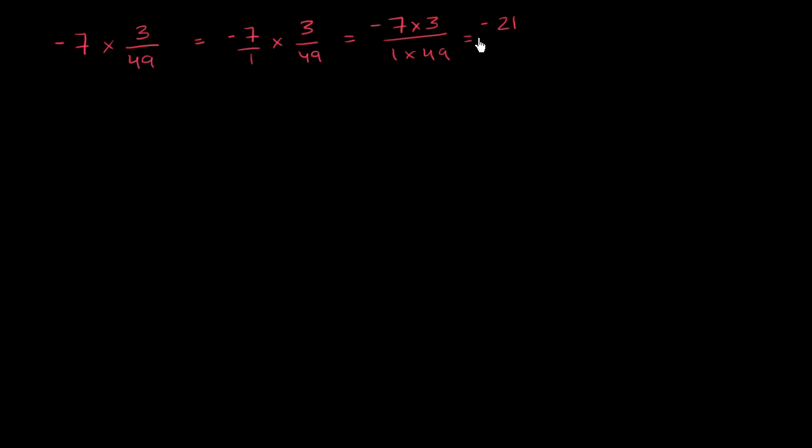You could view this as negative 7 plus negative 7 plus negative 7, and that's going to be over 49. And this is the correct value, but we can simplify it more because 21 and 49 both share 7 as a factor. That's their greatest common factor. So let's divide both the numerator and the denominator by 7. And so this gets us negative 3 in the numerator and in the denominator we have 7. So we could view it as negative 3 over 7, or you could even view it as negative 3 sevenths. Let's do another one.